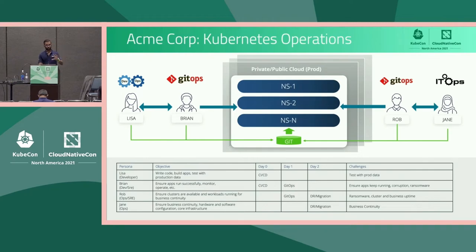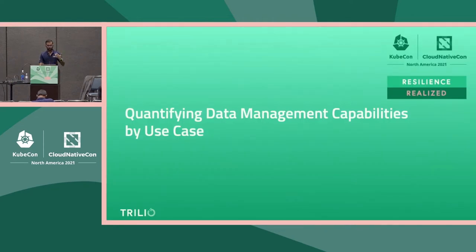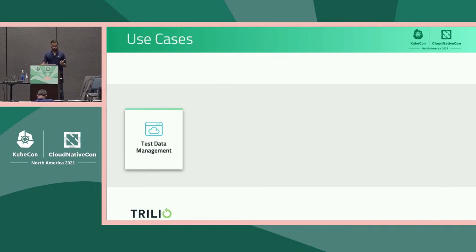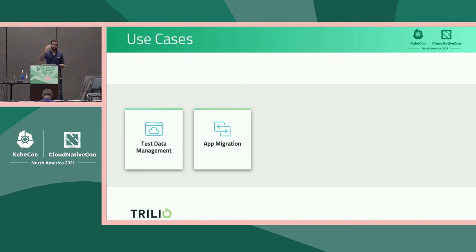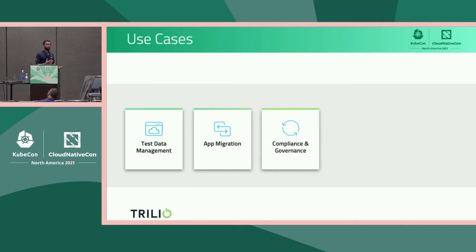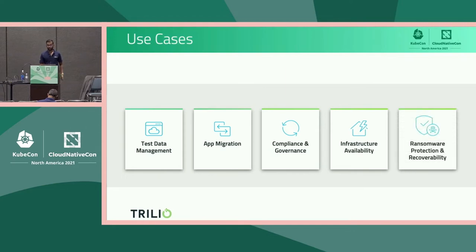That defines our Acme Corp organization. Now let's go through the data management capabilities use case by use case. Test data management is one of the use cases that Acme wants to be good at. Application migration to reduce cloud spend — maybe bringing some applications on-prem instead of running in the public cloud. Compliance and governance — they're using a lot of AI and machine learning, so they need extensive testing to understand the impact of what they're doing. And finally, infrastructure availability and ransomware protection — how do they recover from outages using a cloud-native solution?